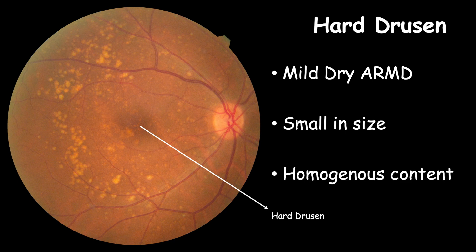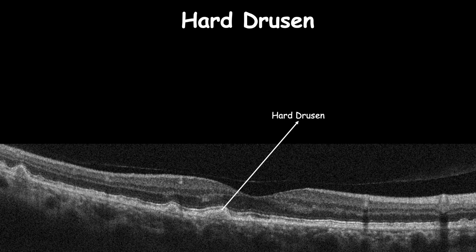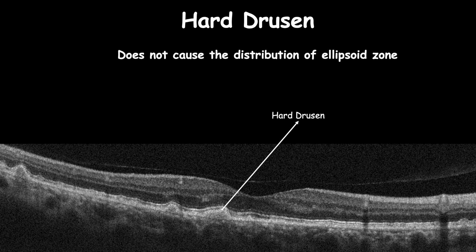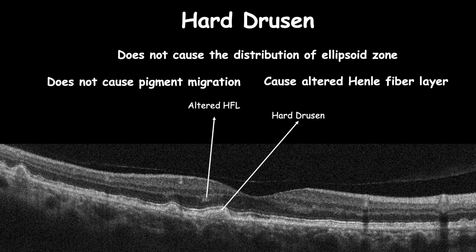Hard drusen can be benign without disturbing the ellipsoid zone or causing pigment migration. However, on OCT, hyperreflectivity can be found next to hard drusen, seen as altered Henle fiber layer.